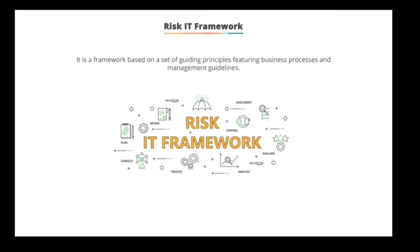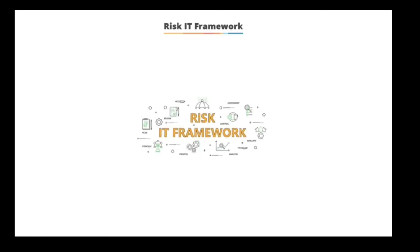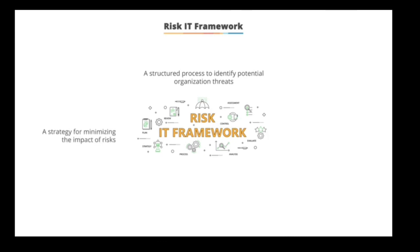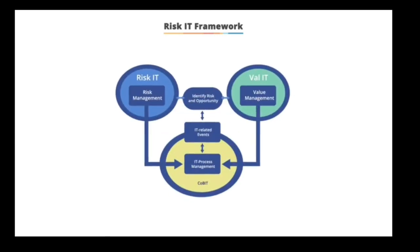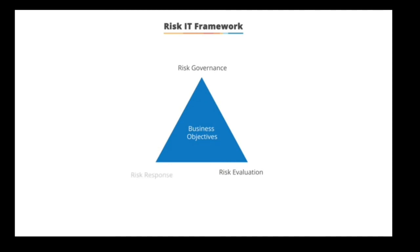The Risk IT framework is based on guiding principles and features business processes and management guidelines that conform to those principles. A risk management framework is the structured process used to identify potential threats to an organization and to define the strategy for eliminating or minimizing the impact of these risks, as well as the mechanisms to effectively monitor and evaluate this strategy. The Risk IT framework complements COBIT, which provides a framework for control and governance of business-driven IT-based solutions, and is used to help implement IT governance in enterprises that have adopted COBIT. The Risk IT framework flows from risk governance to risk evaluation to risk response.